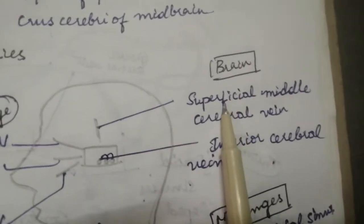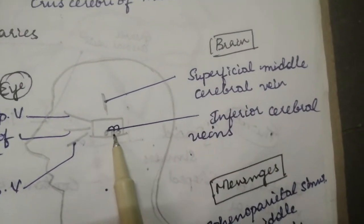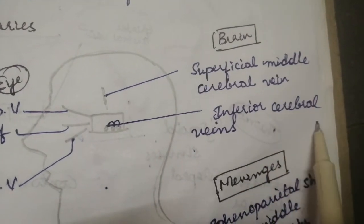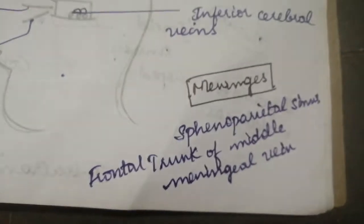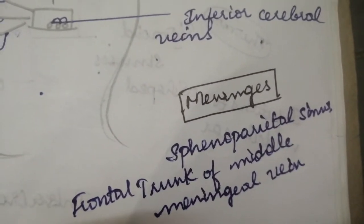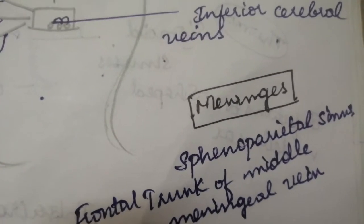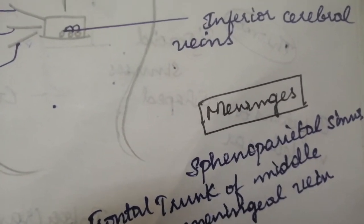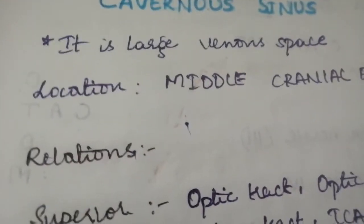When coming into the brain, you have superficial middle cerebral vein and three inferior cerebral veins and overall we have some meninges to the sphenoparietal sinus and your frontal trunk of middle meningeal vein. That is your dura mater, arachnoid, pia mater of your meninges of your tributaries to the cavernous sinus.